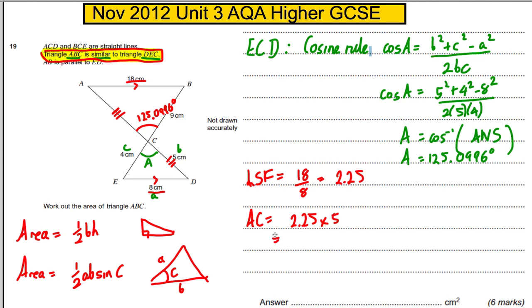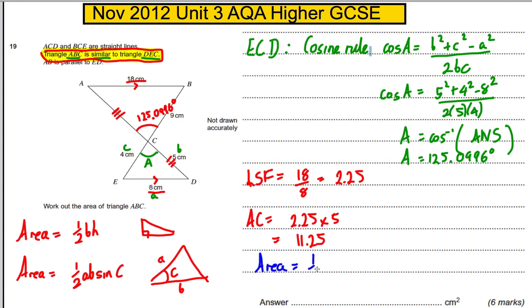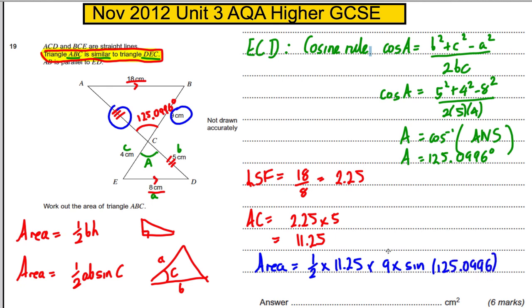Now we can work out the area of triangle ABC. The area equals a half a b sine C, so it's a half times 11.25 times 9 times sine of 125.0996 degrees. Tap that into the calculator and you get yourself...